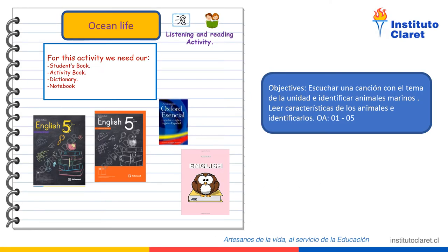This is a Listening and Reading Comprehension activity. For this activity we need our students book, activity book, dictionary, and notebook. Objectives: escuchar una canción con el tema de la unidad e identificar animales marinos. Leer características de los animales e identificarlos.